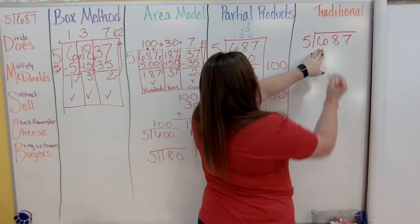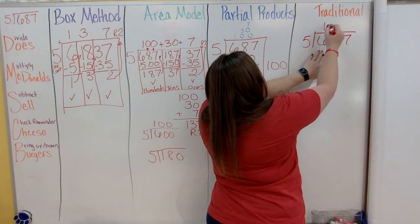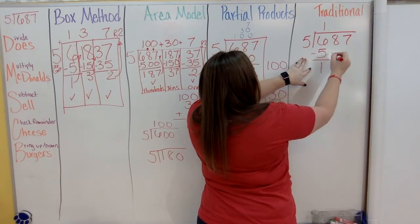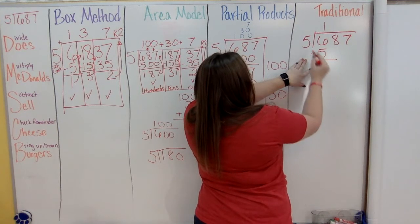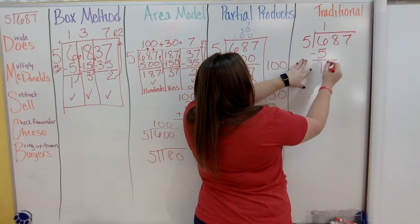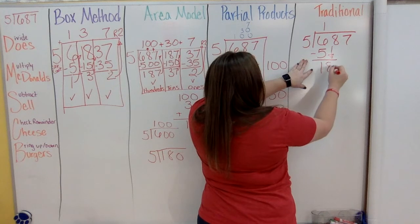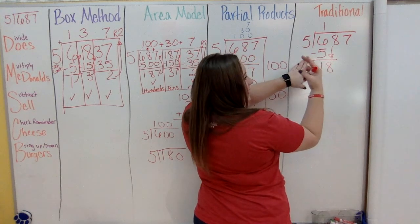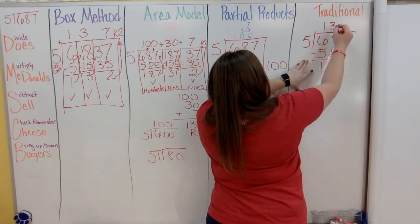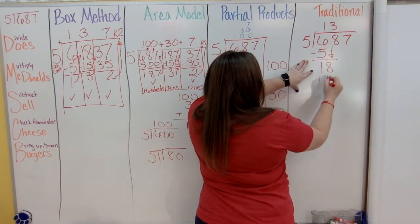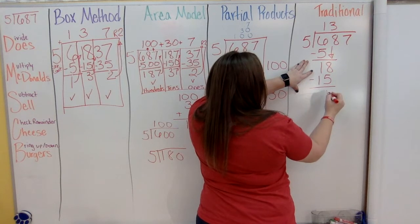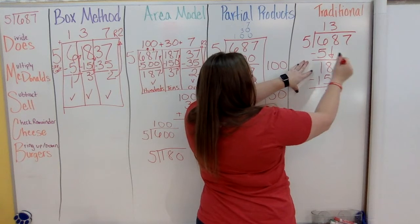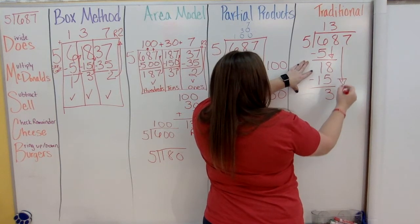Will 5 go into 6? Yes, one time. 1 times 5 is 5. Subtract: 1 left over. Check remainder: is 1 less than 5? Yes, keep going. Bring down the 8. How many times will 5 go into 18? 5, 10, 15 — three times. 3 times 5 is 15. Subtract: 3 left over. Is 3 less than 5? Yes. Bring down the last number: 37.